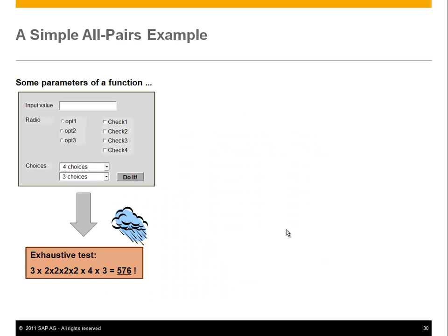The best way to explain it is to look at a simple example which is fake, but it shows the core of the idea. Let's assume you have a little dialog box where you enter some input value, and there are options of what you want to do with it: a radio group with three selections, some check boxes, some combo boxes, and a big 'do it' button.